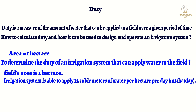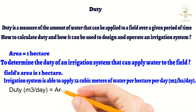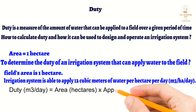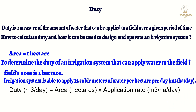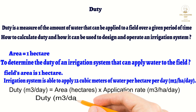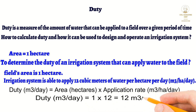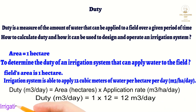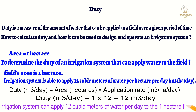To calculate the duty of the irrigation system, we use the following formula: Duty (cubic meters per day) = Area (hectares) × Application rate (cubic meters per hectare per day). In this case, duty = 1 hectare × 12 cubic meters per hectare per day = 12 cubic meters per day. This means that the irrigation system can apply 12 cubic meters of water per day to the 1 hectare field.